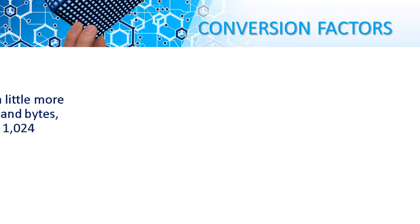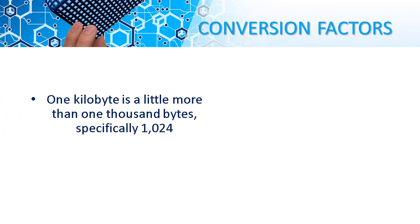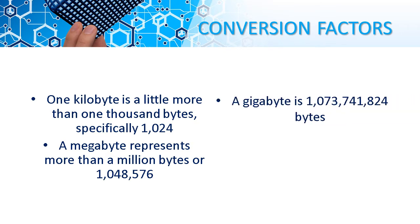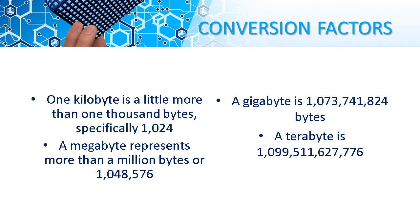Conversion Factors: 1 kilobyte is a little more than 1,000 bytes, specifically 1,024. A megabyte represents more than a million bytes, or 1,048,576. A gigabyte is 1,073,741,824 bytes, and a terabyte is 1,099,511,627,776 bytes.